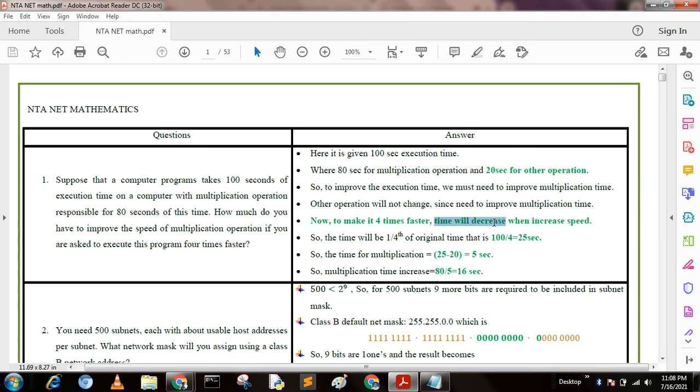To make it four times faster, time will decrease when speed is increased, so time will be one-fourth of the original time, that is 100/4 = 25 seconds. So the time for multiplication is 25 - 20 = 5 seconds. Multiplication time increased 16 times faster.